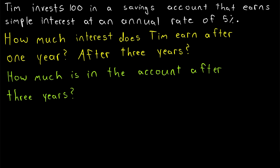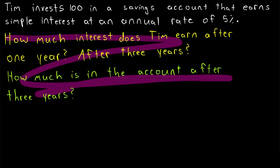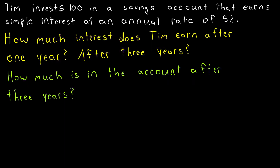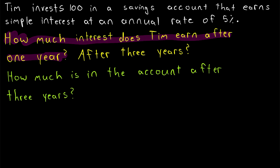Here's the problem. Tim invests 100 — we're leaving off units of currency because they do not matter — in a savings account that earns simple interest at an annual rate of 5%. We've got a few questions to answer here. Let's focus on the first one: how much interest does Tim earn after one year?